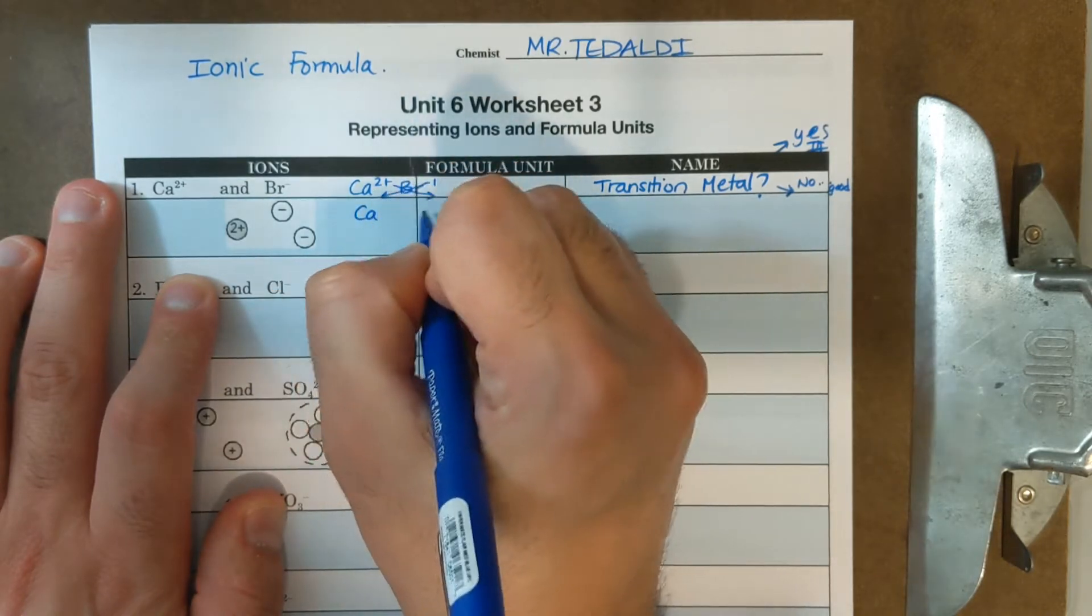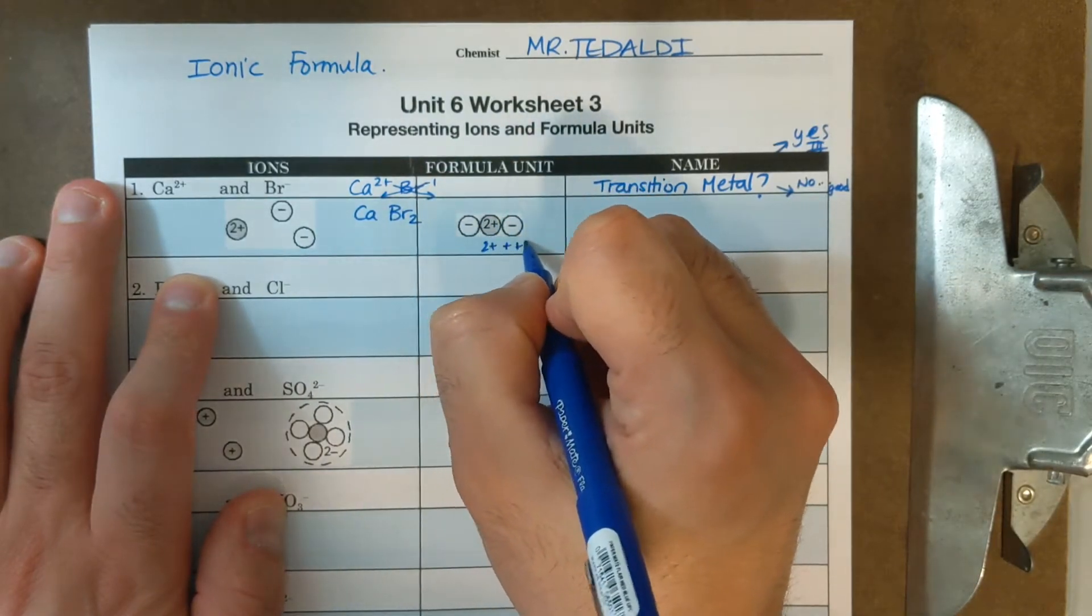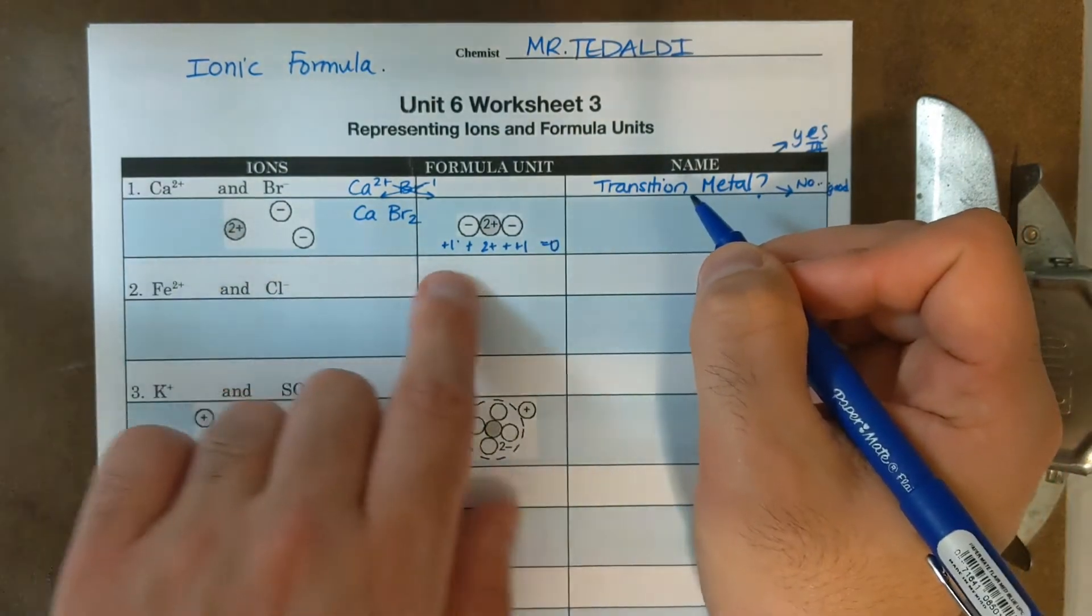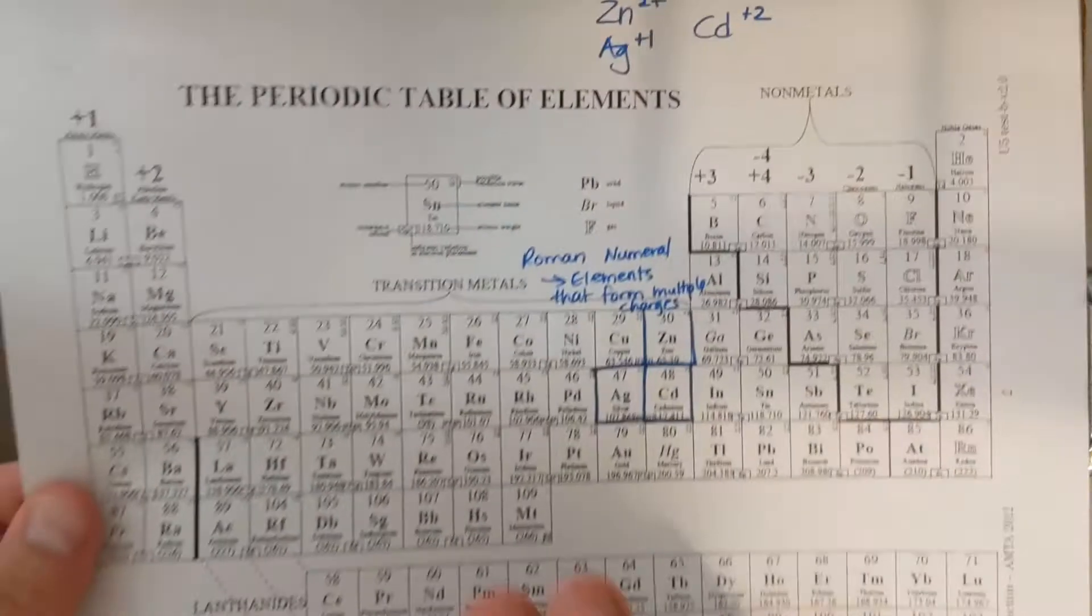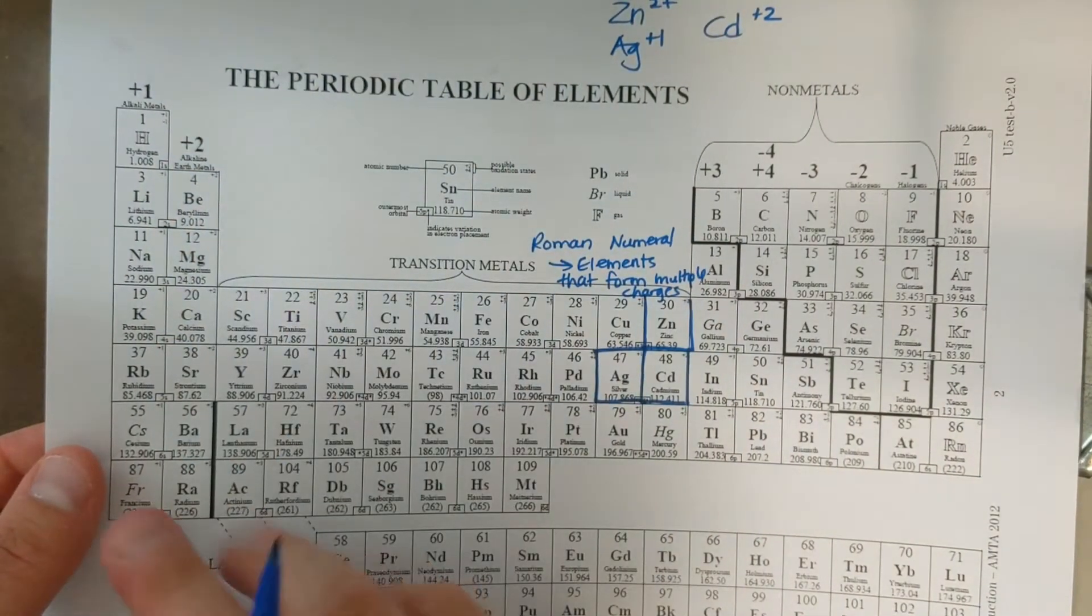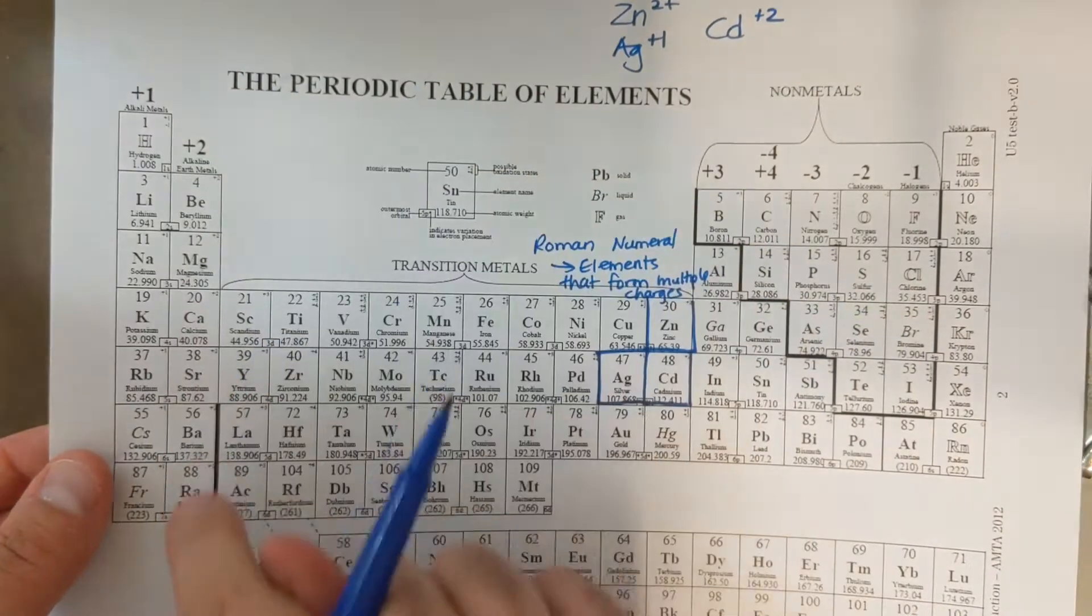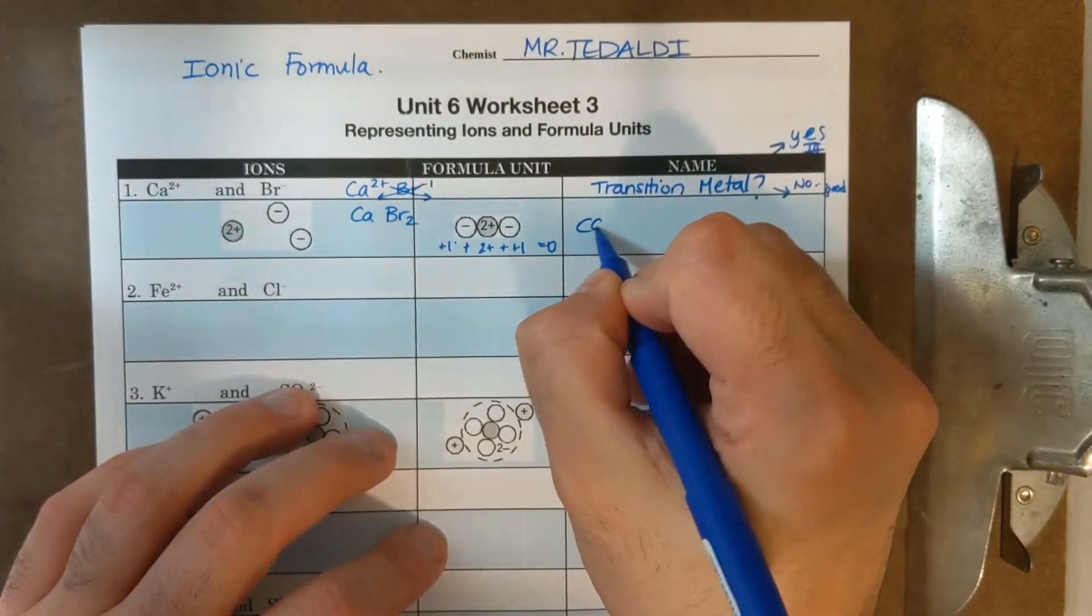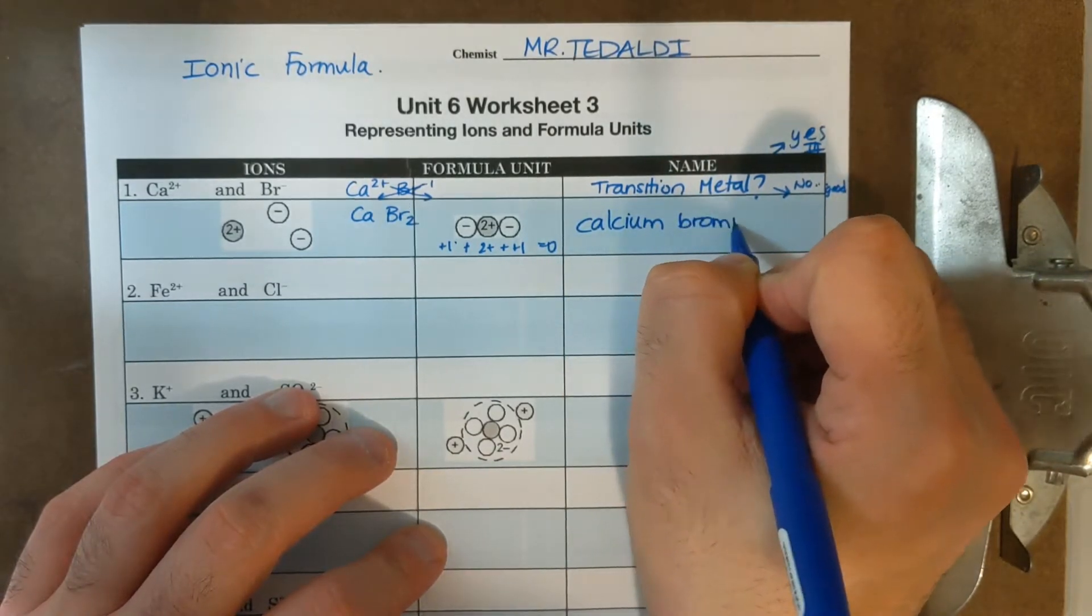One Ca, two Brs. Ca two plus, plus one, plus one, that's going to equal to zero. Now calcium, is that a transition metal? If I look on the periodic table, calcium is in group two. It is not in the middle where it's bracketed off as transition metal. It only forms one charge.